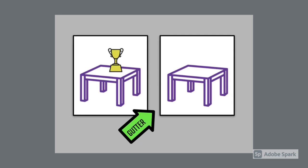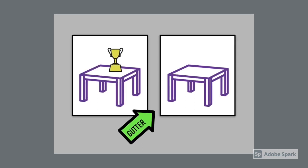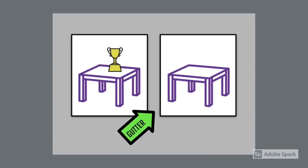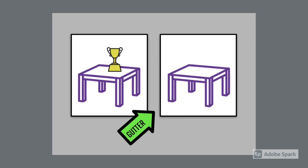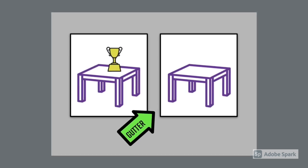Let's try another. What happened to the trophy? Did it turn invisible? Maybe a jealous competitor hid the trophy. Perhaps it just floated away. The reader gets to decide what happened between the comic book panels, thanks to the gutter.